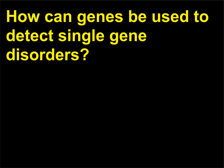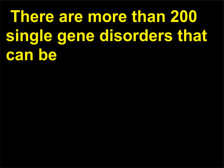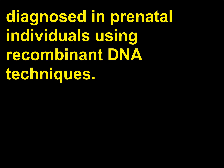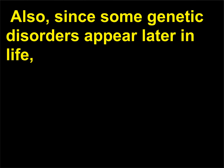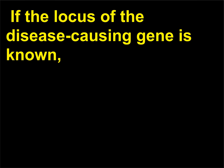How can genes be used to detect single-gene disorders? Genetic testing can be used to determine those at risk for a particular inherited condition. There are more than 200 single-gene disorders that can be diagnosed in prenatal individuals using recombinant DNA techniques. Also, since some genetic disorders appear later in life, children and adults can be tested for genetic disorders before becoming symptomatic.